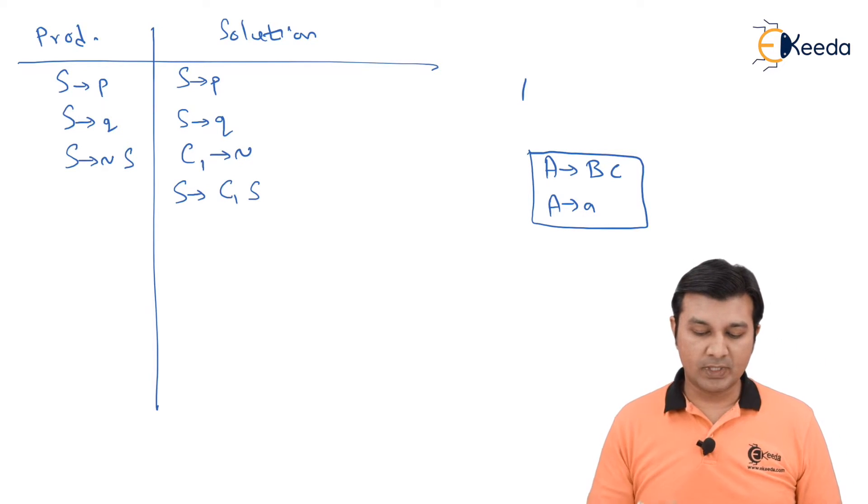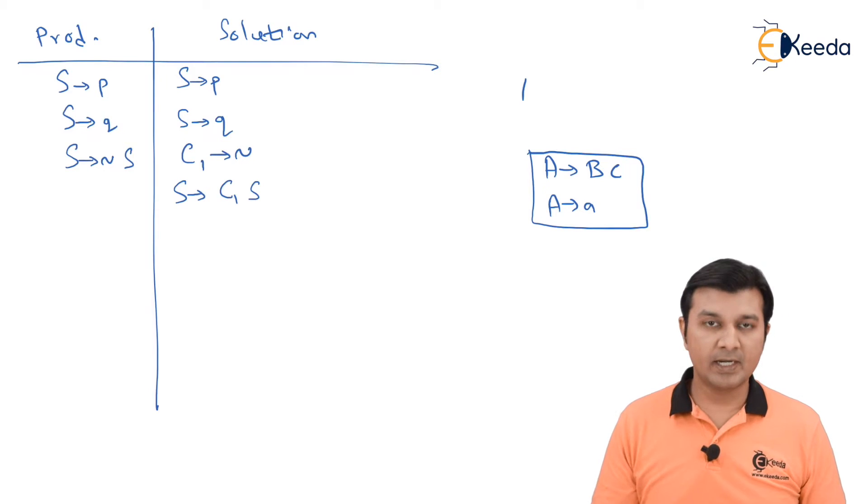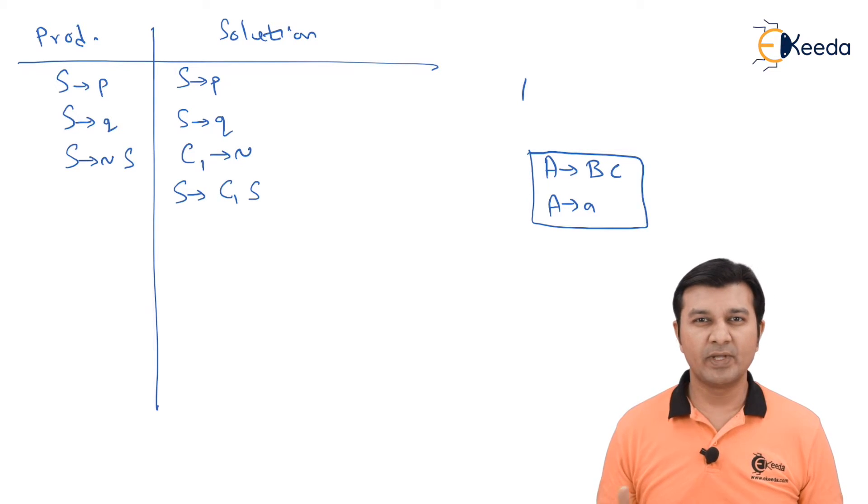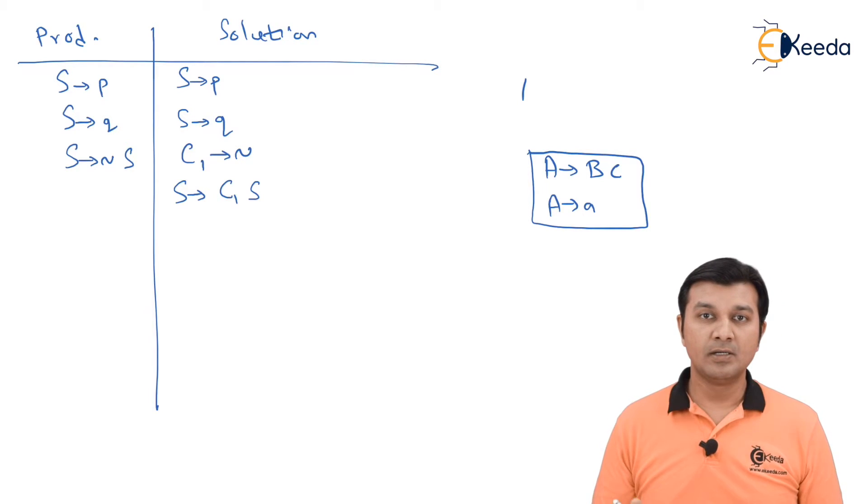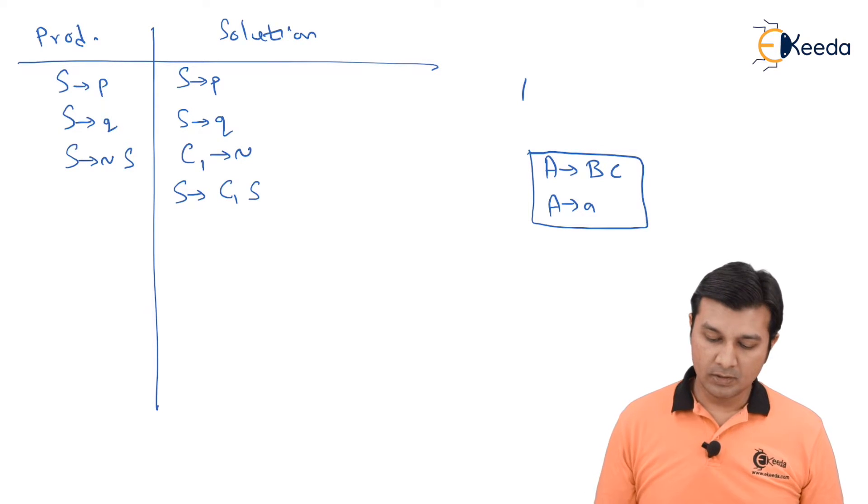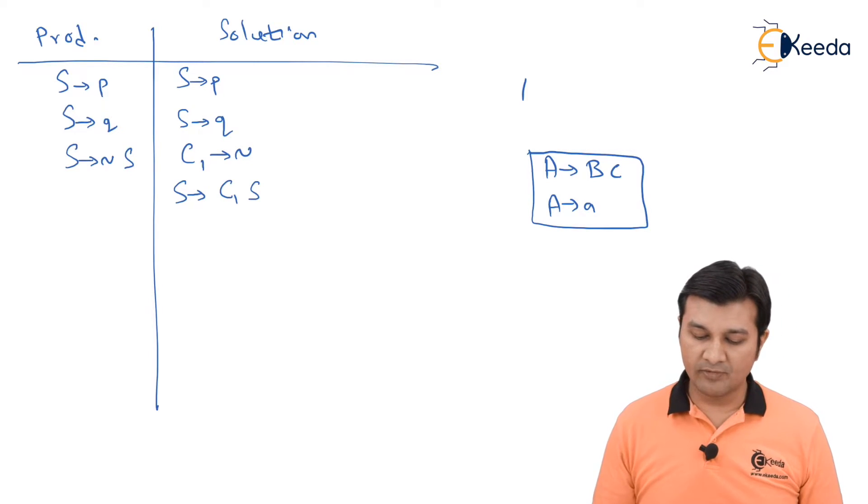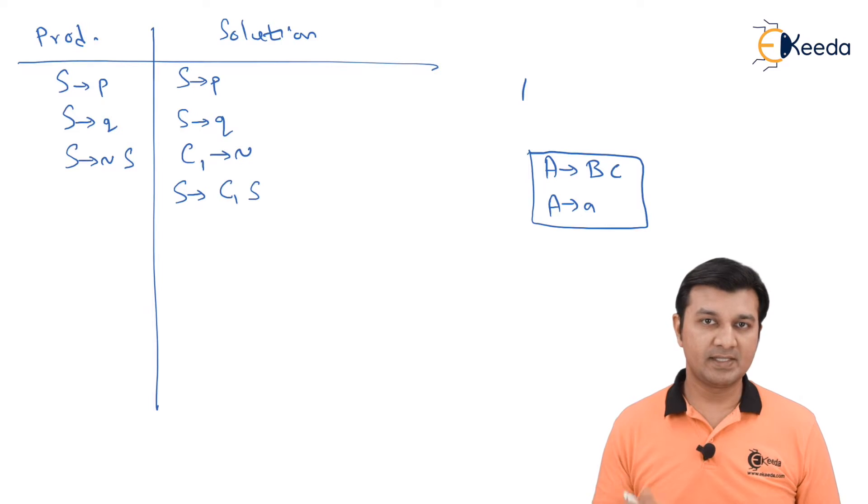Now, you can of course write it in the production and rewrite in the solution or directly write in the solution. In the previous problem, I did do it stepwise but frankly speaking, this is a very trivial step. So you can ideally skip and directly write as the way I have written over here. I have my S gives tilde S purely converted to the form which is required by the CNF. Going on to the next one.